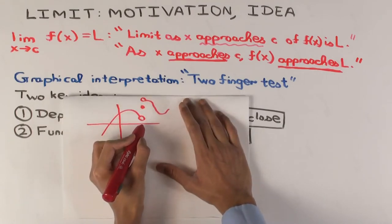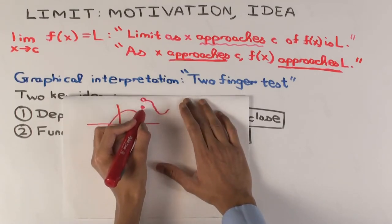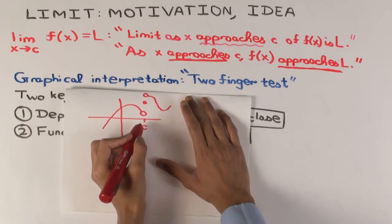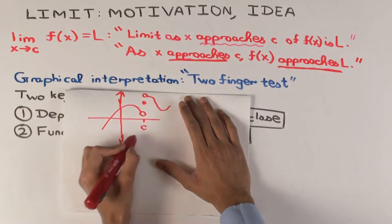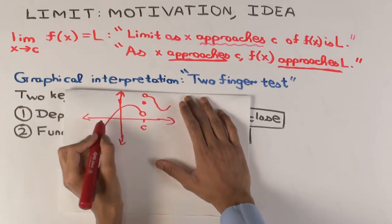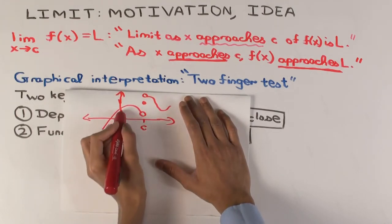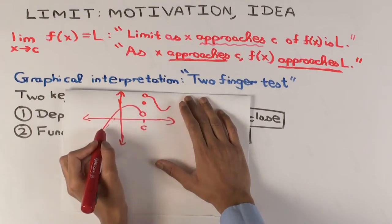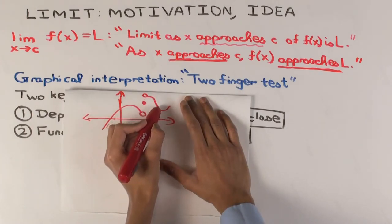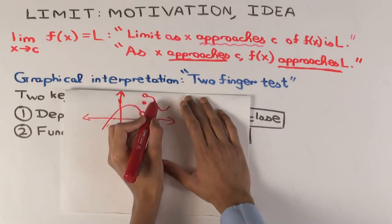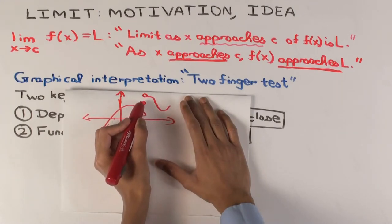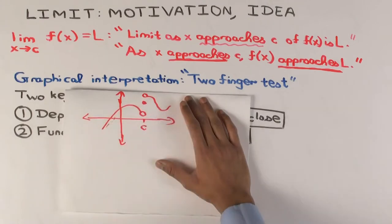So this value x equals c is here, and this is the graph of the function. These curves are the graph of the function — for x less than c the graph follows this curve, for x greater than c the graph follows this other curve, and at x equal to c the value is that filled dot.